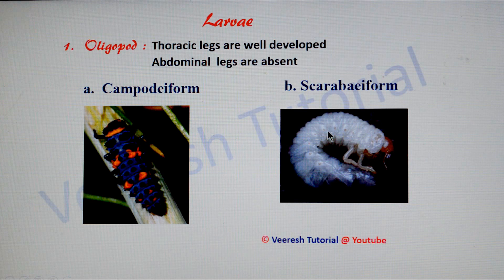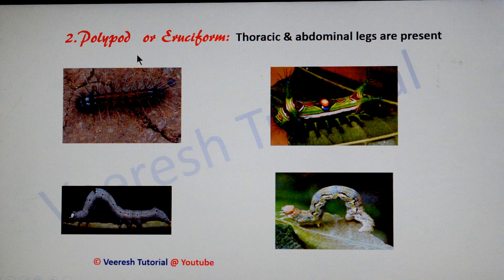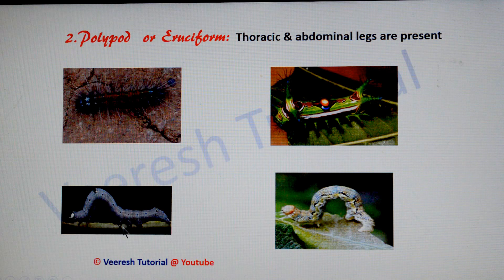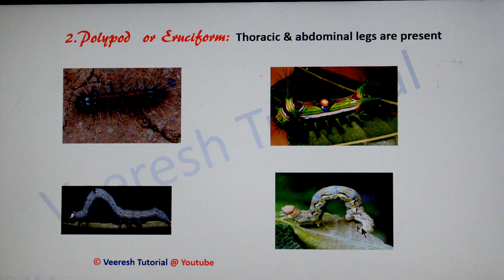The second type is polypod larvae, where both thoracic and abdominal legs are present. Abdominal legs are called prolegs. Different types include the hairy caterpillar where the body is covered with hairs; slug caterpillar where scoli are distributed all over the body, also called platiform larvae; semi-looper where only four pairs of prolegs are present and the first pair is absent; and looper where only two pairs of prolegs are present, located on the sixth and tenth abdominal segments.